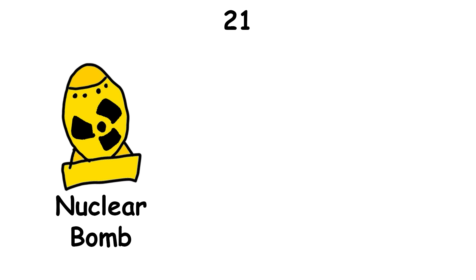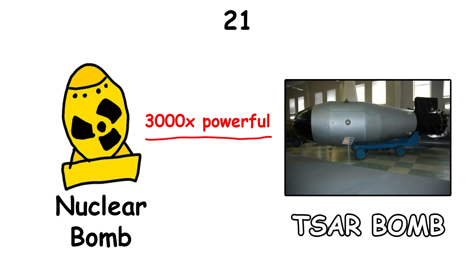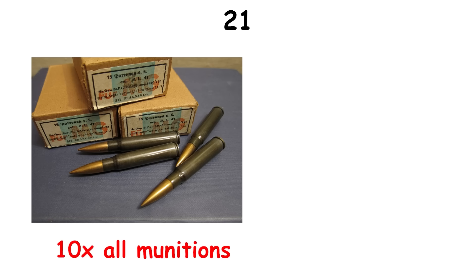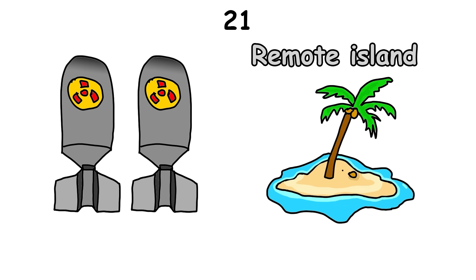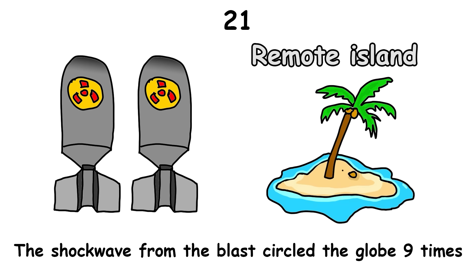The most powerful nuclear bomb ever created, the Tsar Bomba, is 3,000 times more powerful than the original nuclear bombs, and its power is 10 times that of every single munition used in World War II combined, including the two nuclear bombs. When tested on a remote island, they saw that the shockwave from the blast circled the globe nine times.